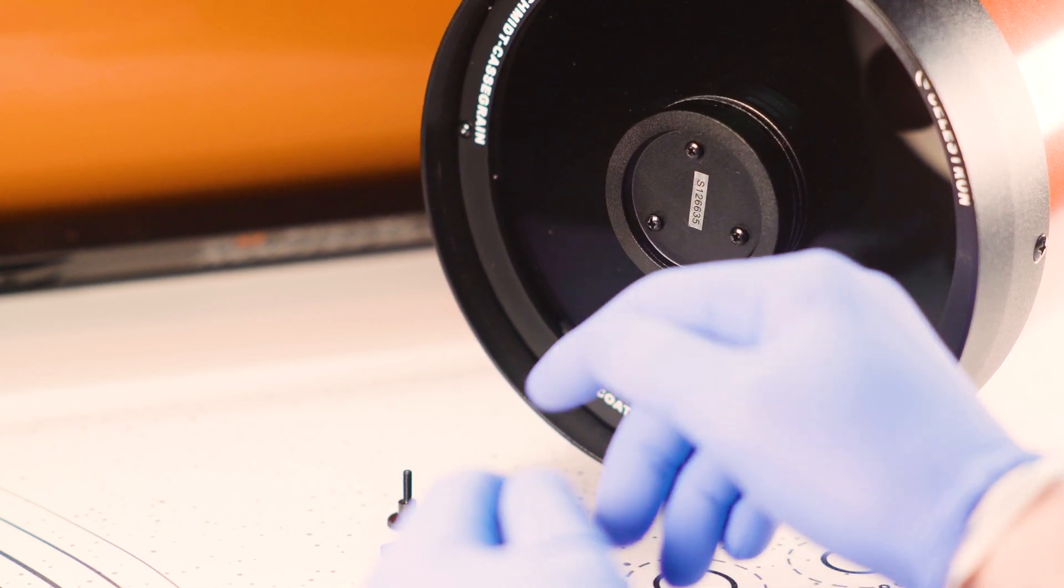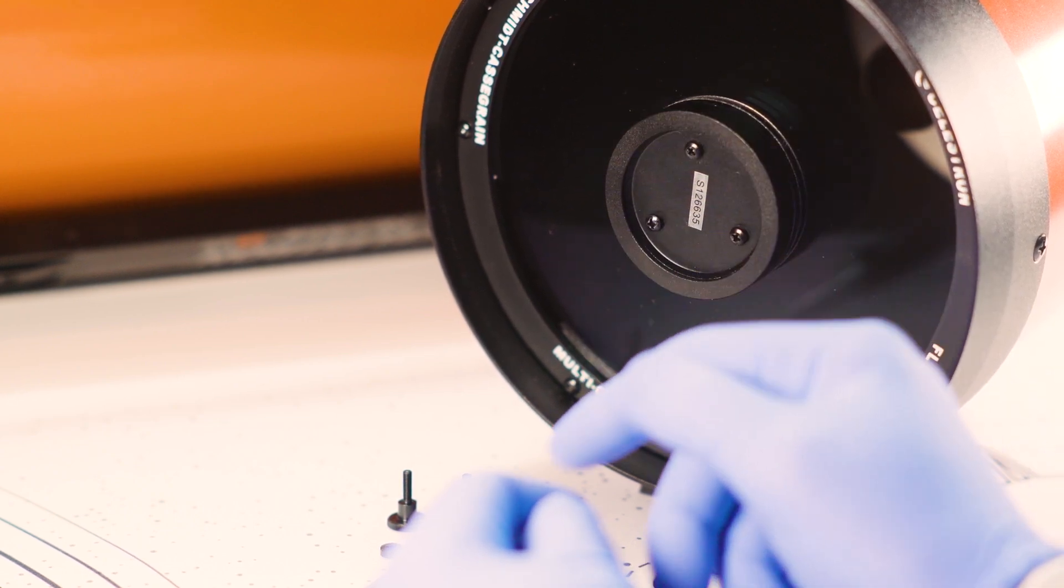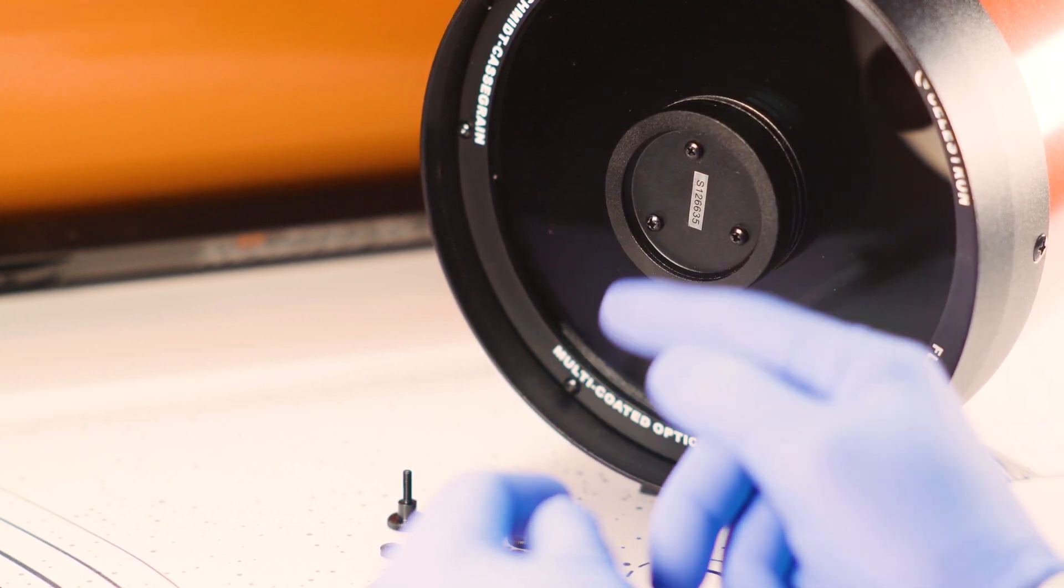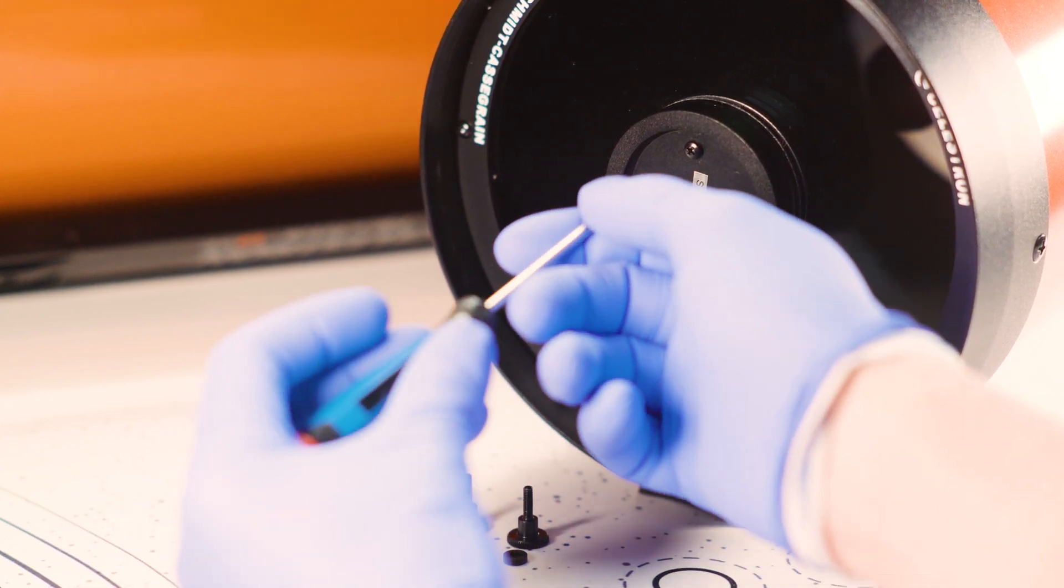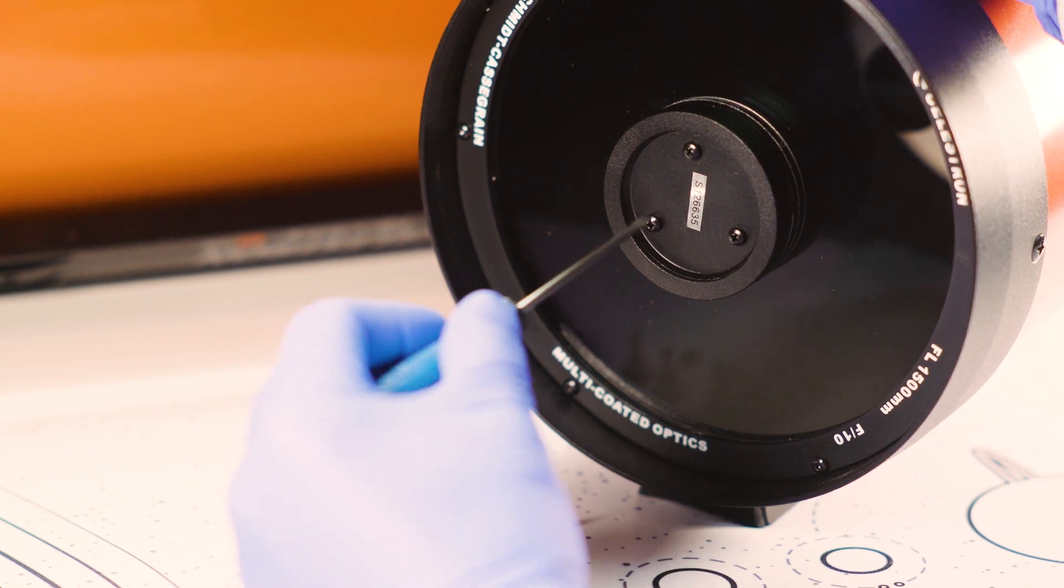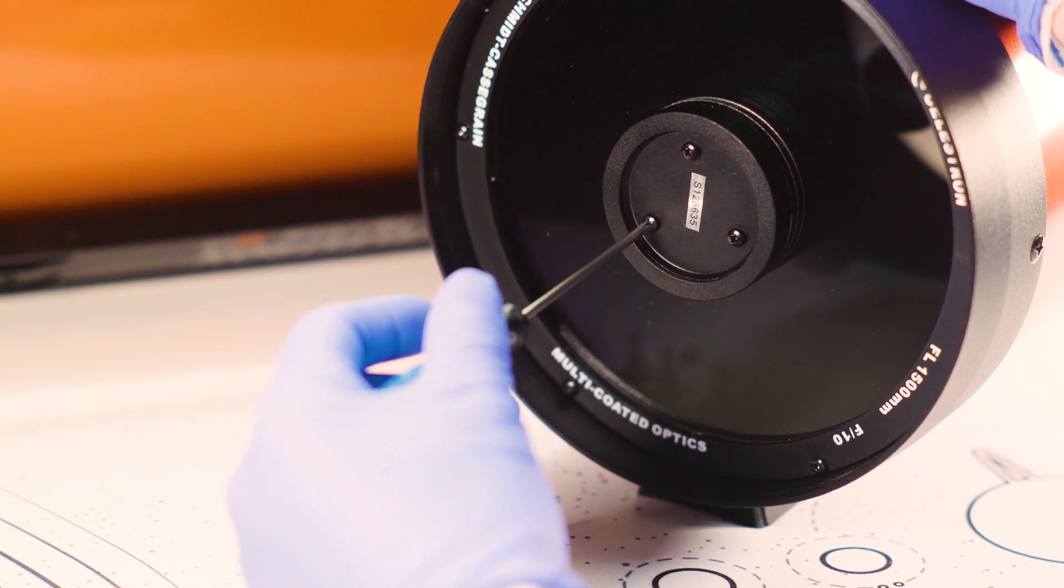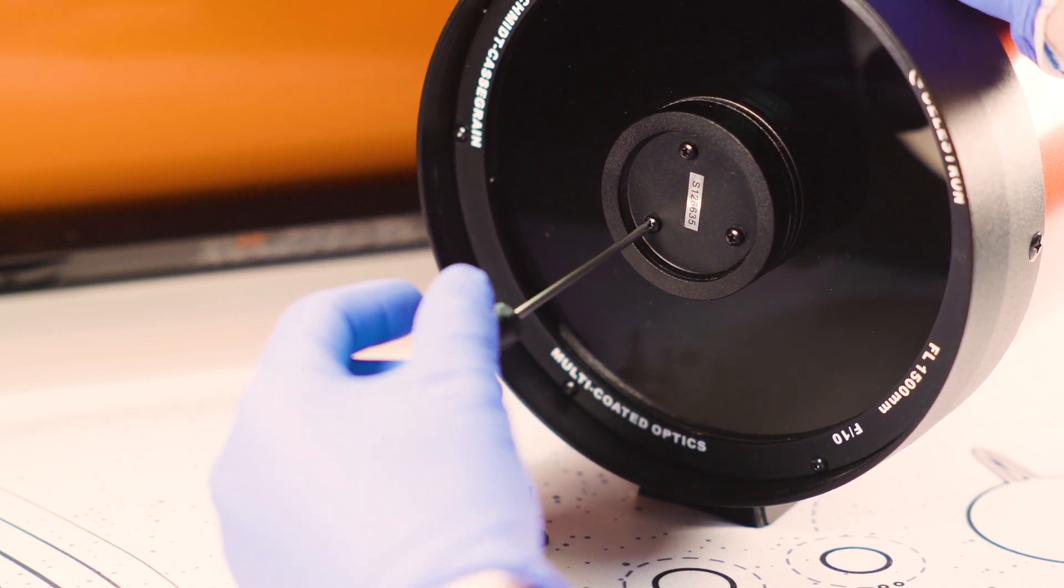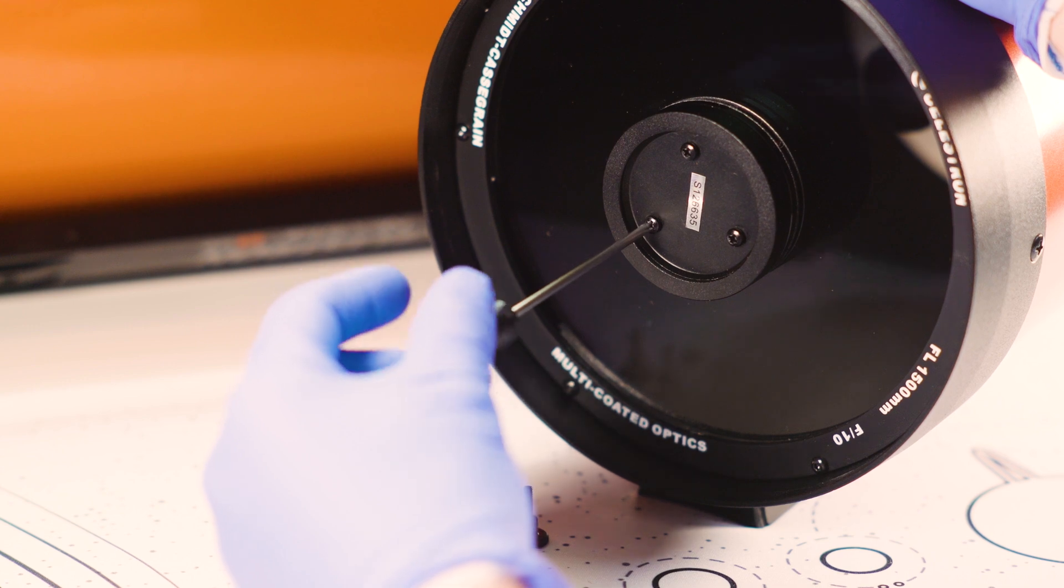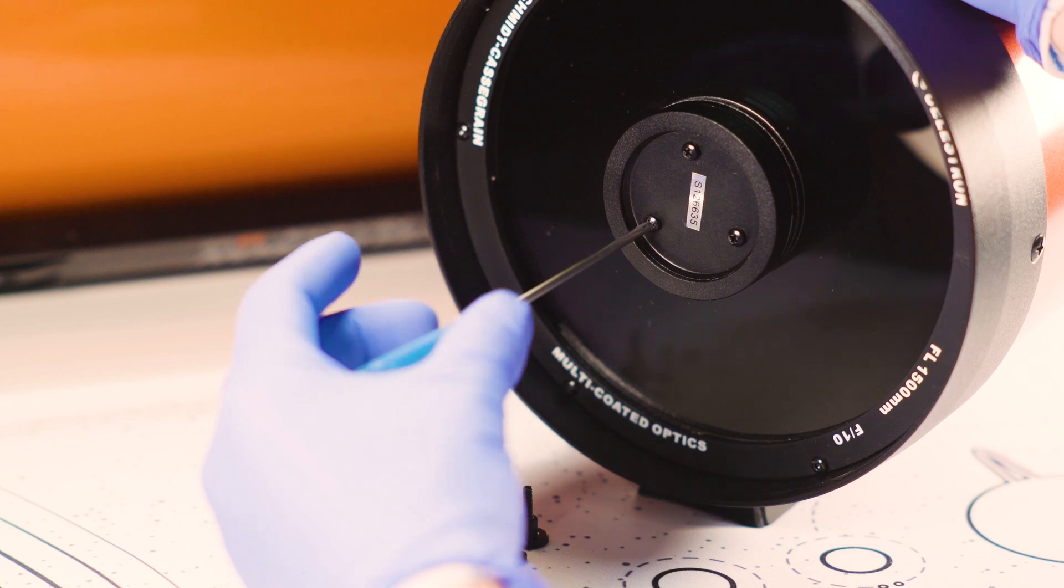What we're going to start doing is taking out just one of these screws. Now it's important that you do not remove more than one screw at a time because these are the only things keeping the secondary captive on this scope, and so if you remove all three of these or more than one of them you risk that secondary mirror falling into the scope which means you're going to have to disassemble this which is a pretty involved process.